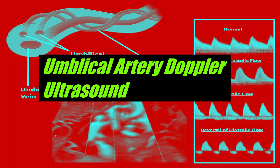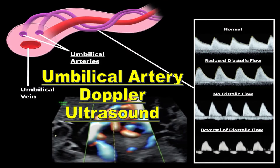Bismillahirrahmanirrahim. Today we will talk about Doppler ultrasound, which is an extremely important tool in the assessment of fetal well-being and is paramount in deciding the timing of births in certain high-risk pregnancies. In this video, first of all, we will discuss the different waves of Doppler along with their managements. And then in the end, we will discuss certain indices used in Doppler ultrasound, like resistance index and pulsatility index.